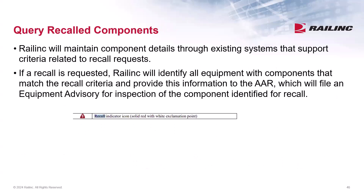Component tracking also allows us to query recalled components. Railinc will maintain component details through existing systems that support criteria related to recall requests. General users do not have the ability to query all recalled components, but if your company registered or associated a recalled component, you can see those using the predefined query.